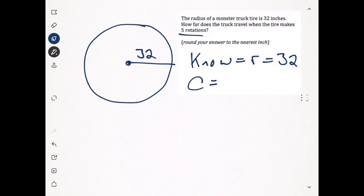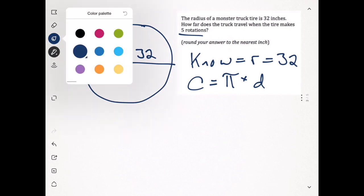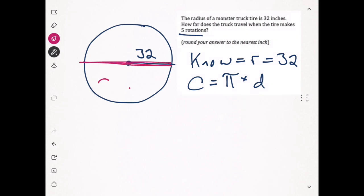We're going to use the circumference formula: circumference equals pi times d, but we don't know the diameter. If the radius is 32, we know the diameter is twice that, so the diameter equals 64. Circumference equals 3.14 times 64. You can punch that in: 3.14 times 64, and that gives us 200.96.